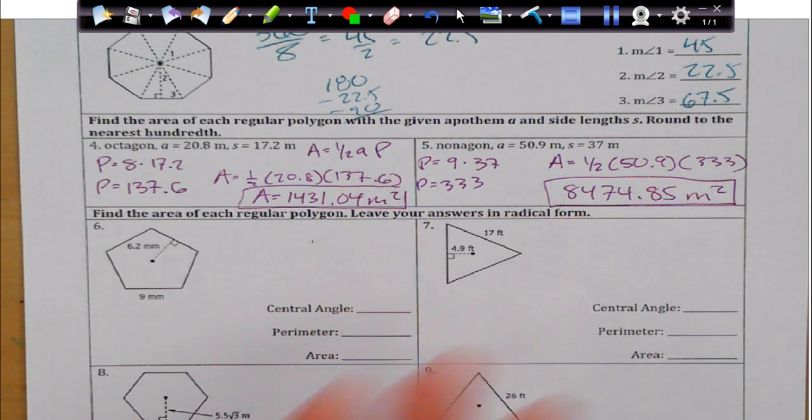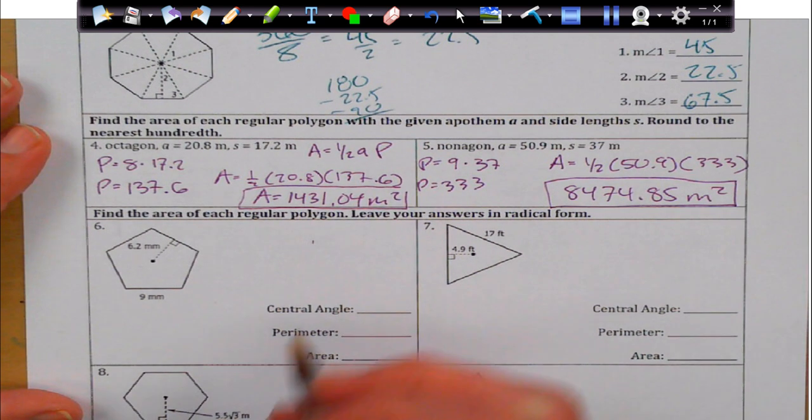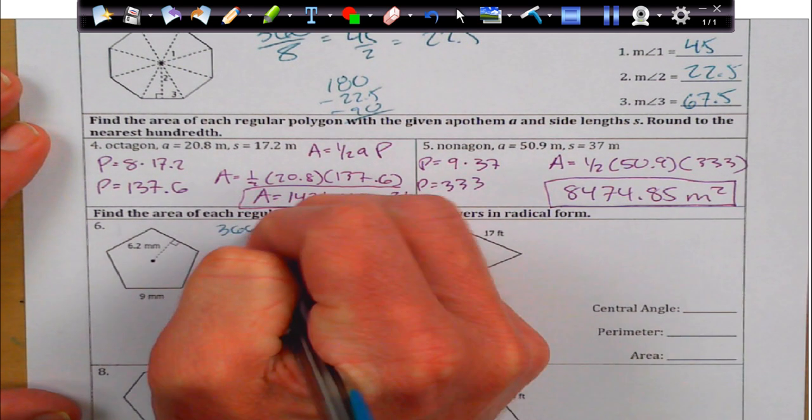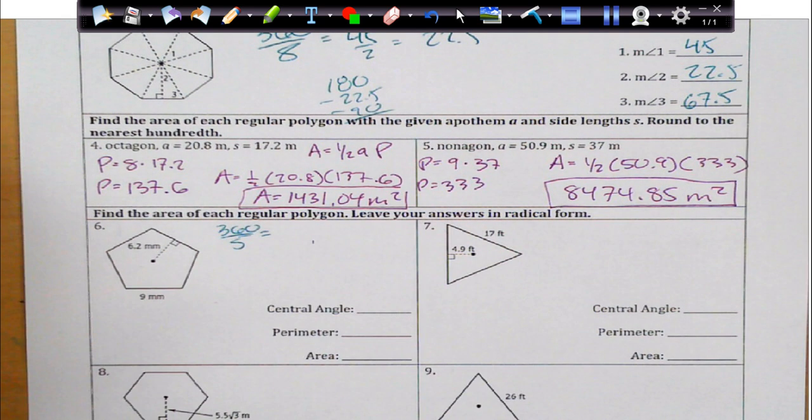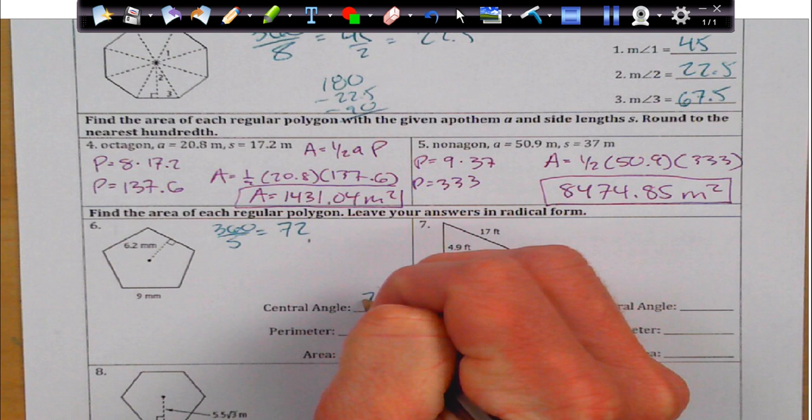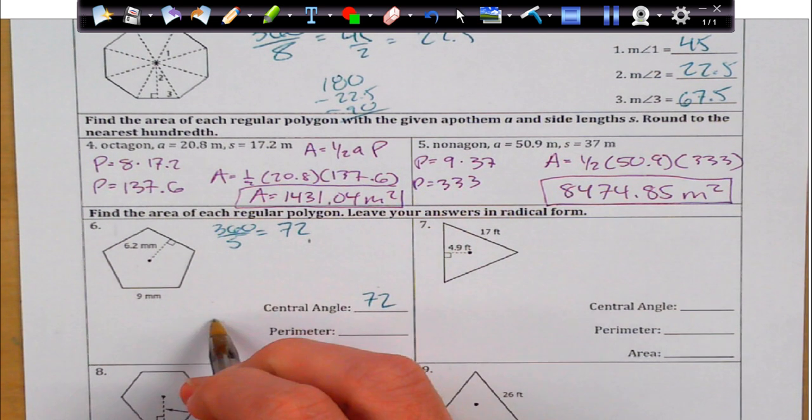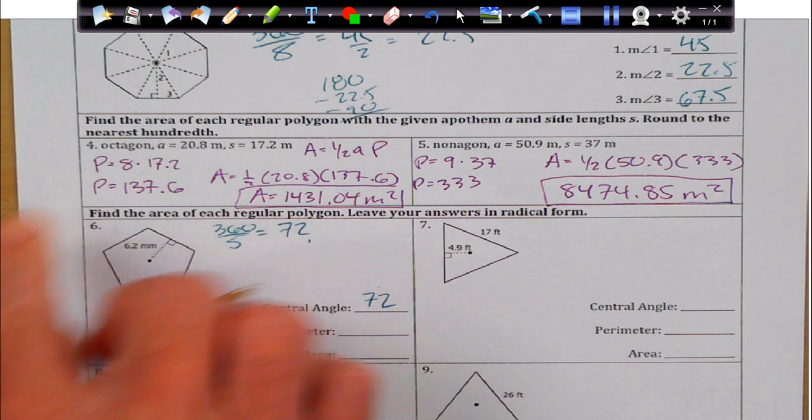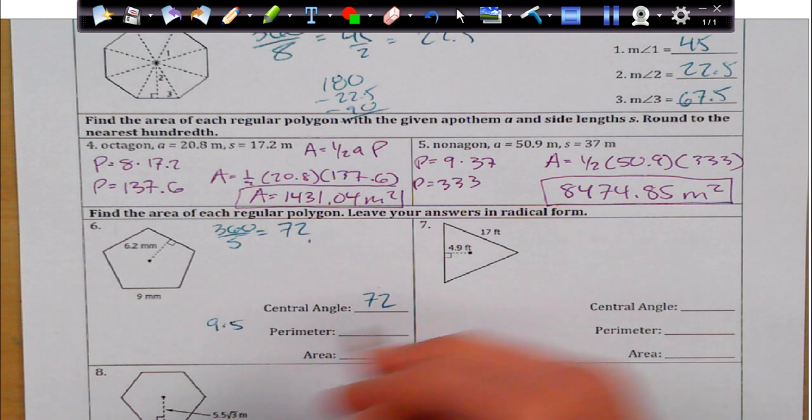We actually are given the apothem and the side lengths. We can actually do this similar to the two above, but it does ask us for the central angle. So, the central angle is going to be 360 divided by 5. And if we do that, I believe we're going to get 72. So, there's my central angle. The perimeter, that's just going to be 9 times 5, because there's 5 different sides, which is going to give me 45.